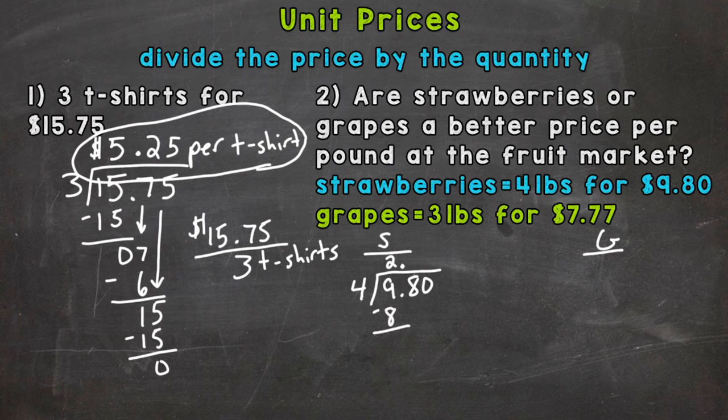subtract, we have 18 now, and we can pull 4 whole fours out of 18, that brings us to 16. Subtract, we get 2, bring down this zero. 20 divided by 4 is 5, 5 times 4 is 20, subtract we get zero. So strawberries are $2.45 per pound.